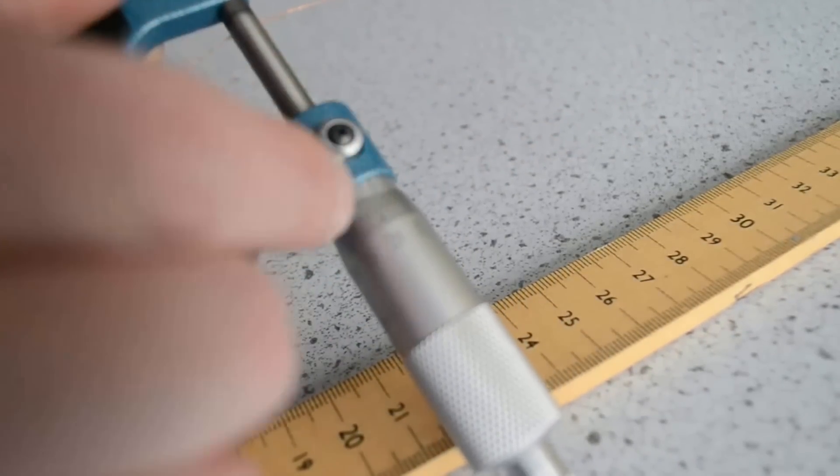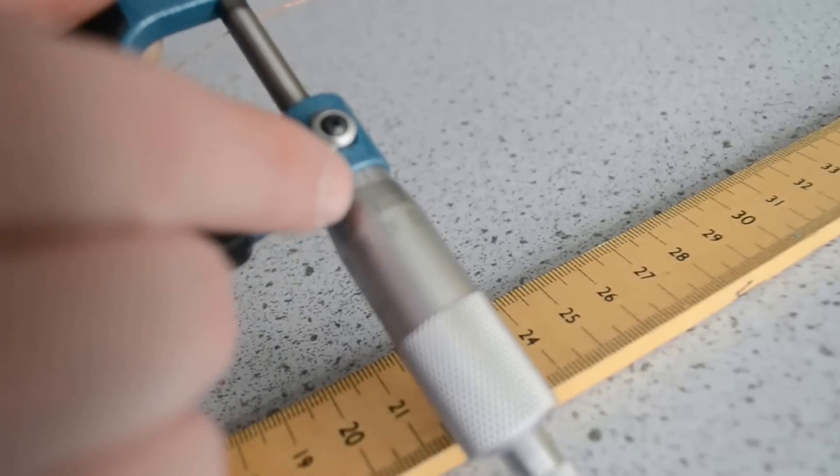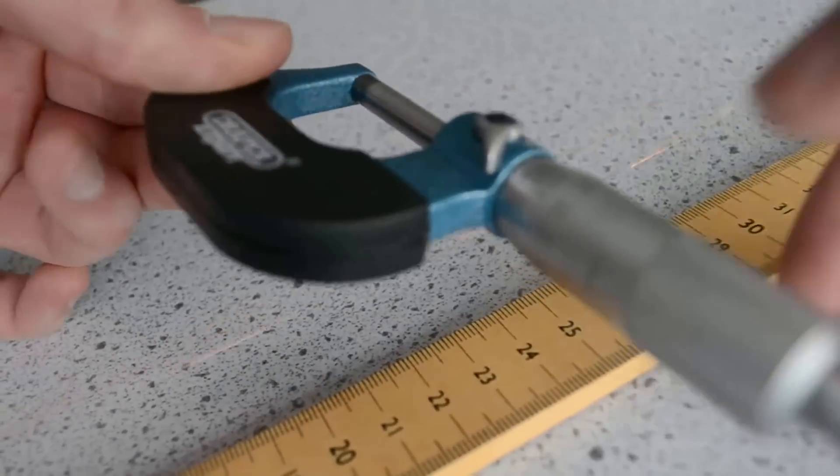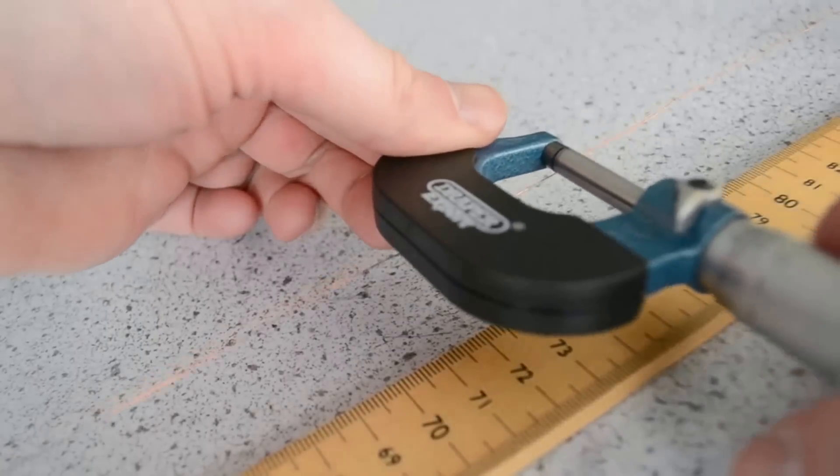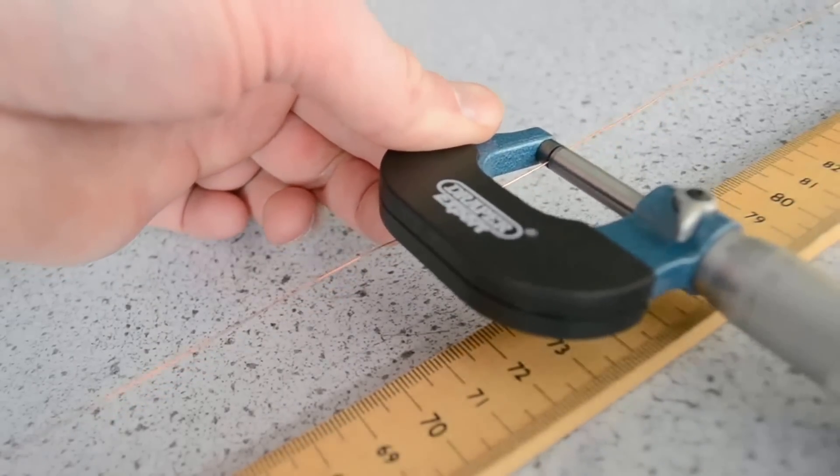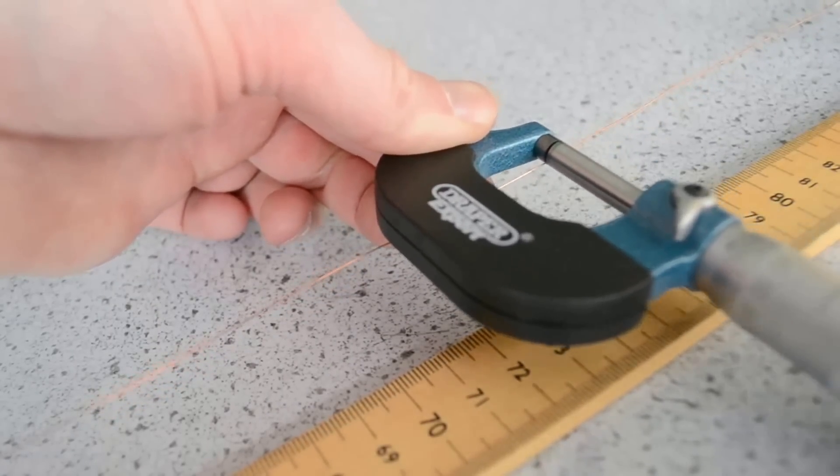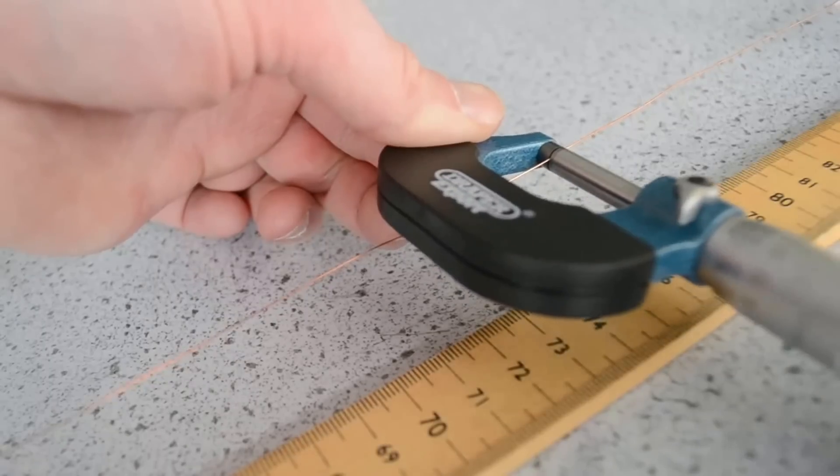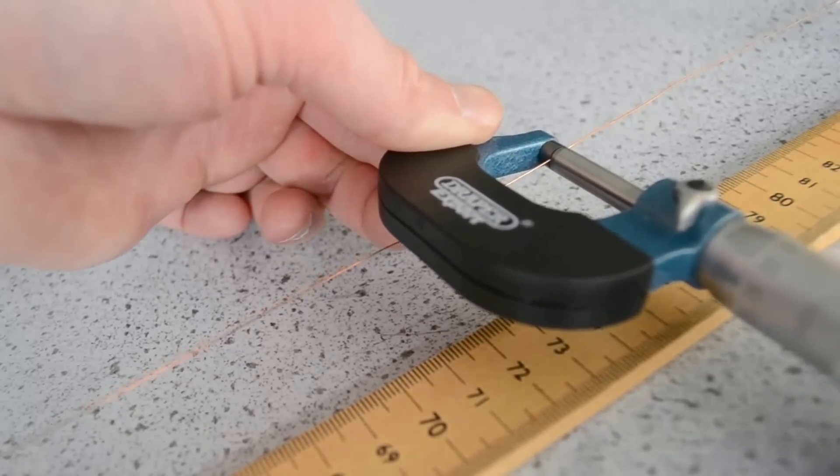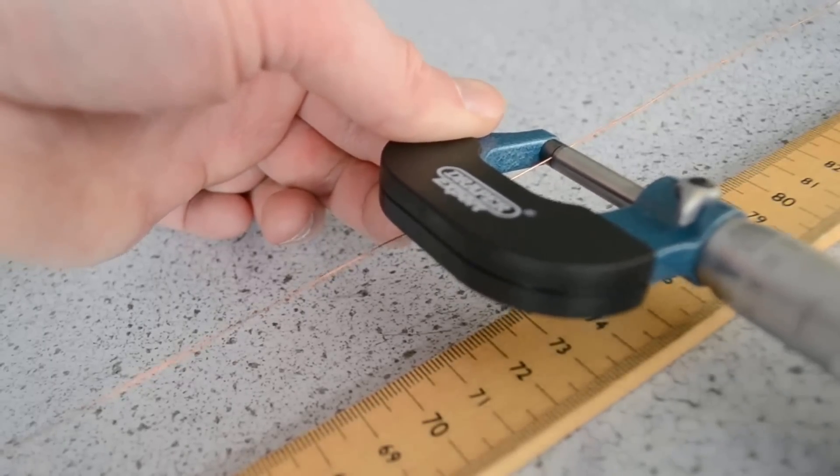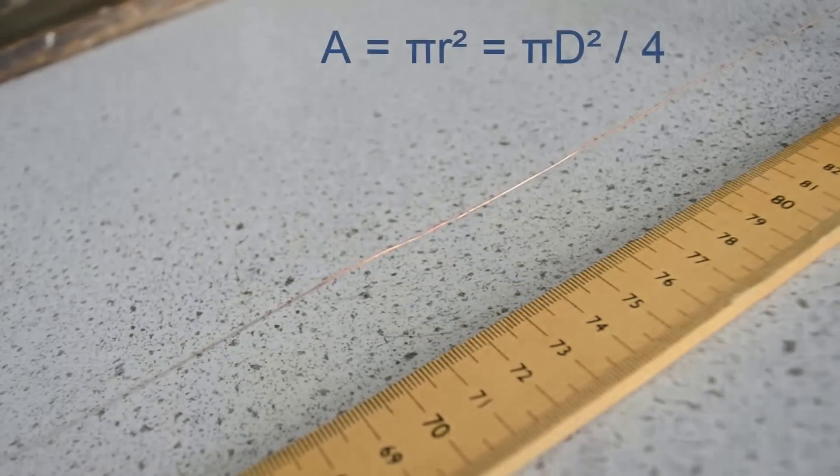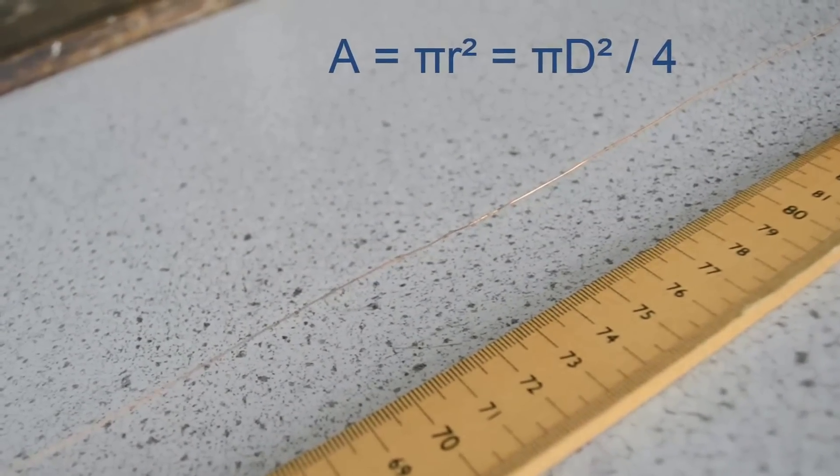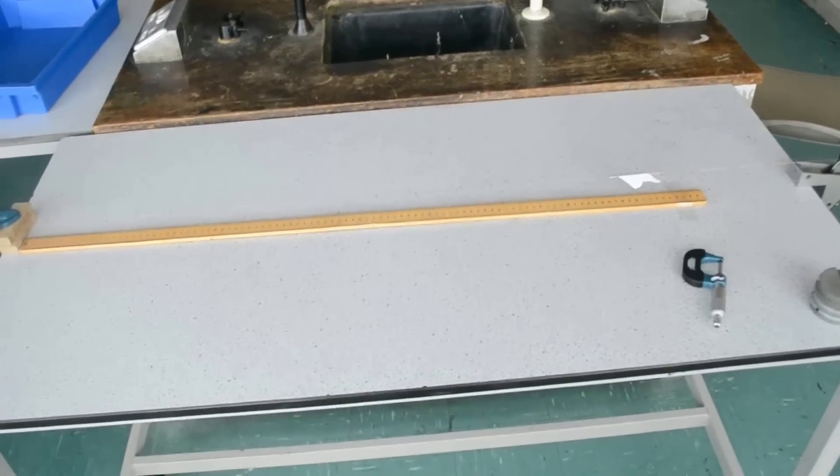The reading on the micrometer here is 0.37 millimeters. So we'll then repeat this measurement further down the wire, and this time again it is 0.37 millimeters. We continue taking measurements, two or three of those, and find the mean and from the diameter we can then calculate the cross-sectional area.